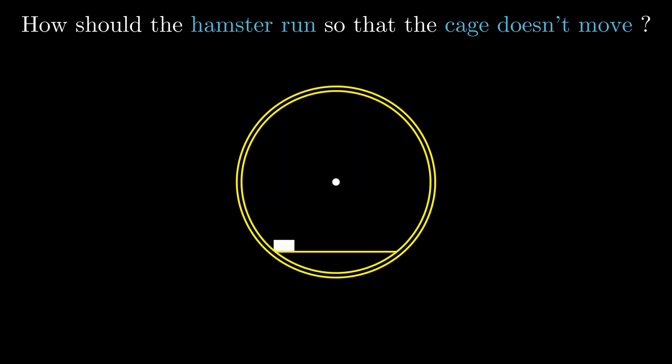To solve the problem, let's think about what forces are acting on each of the bodies. For the hamster, there's gravity pulling downwards and the cage pushing it upwards by a normal force. For the hamster to accelerate, we need a third force. To start running, the hamster pushes backwards, and by Newton's third law, the ground pushes the hamster forward by the force of friction. Depending on how fast or slow the hamster wants to accelerate, the frictional force will be correspondingly large or small.